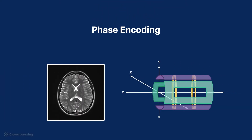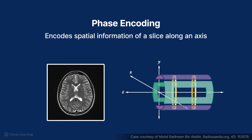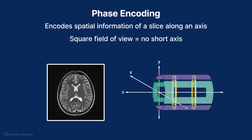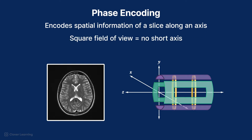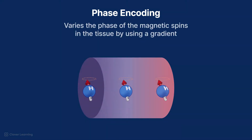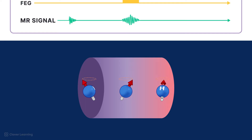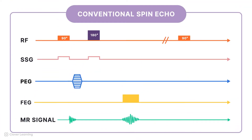Phase encoding is a method used to encode spatial information of a slice along its short axis when a short axis is available. If using a square field of view, there is no short axis, and occasionally we use the long axis of the anatomy for phase encoding. Phase encoding works by varying the phase of the magnetic spins in the tissue using a gradient magnetic field. Phase encoding occurs through the application of a phase encoding gradient, or PEG.